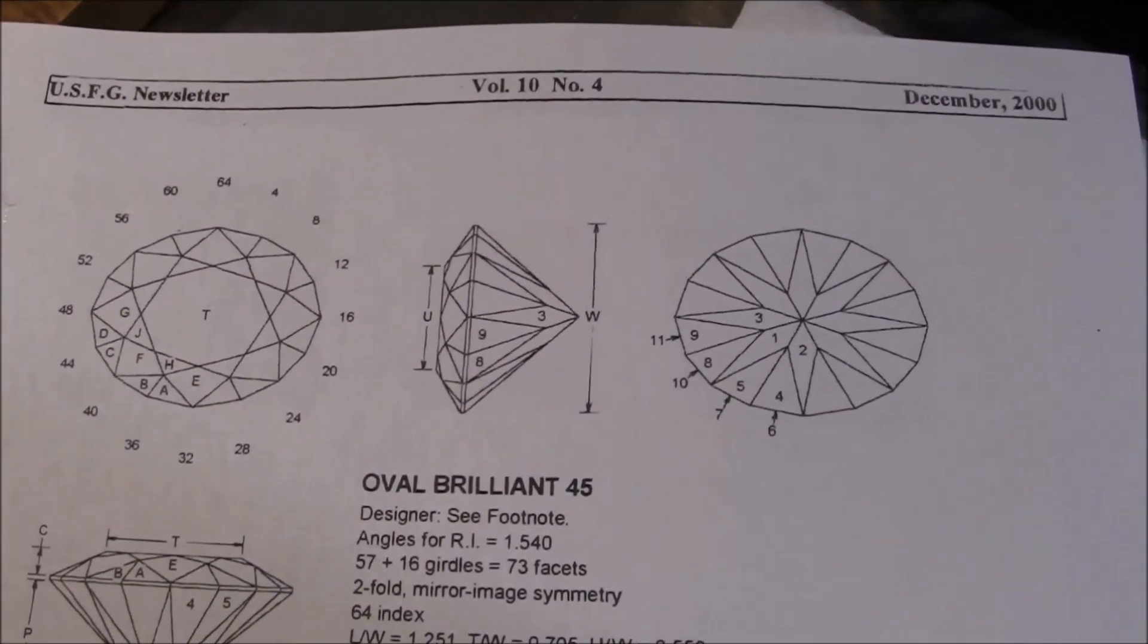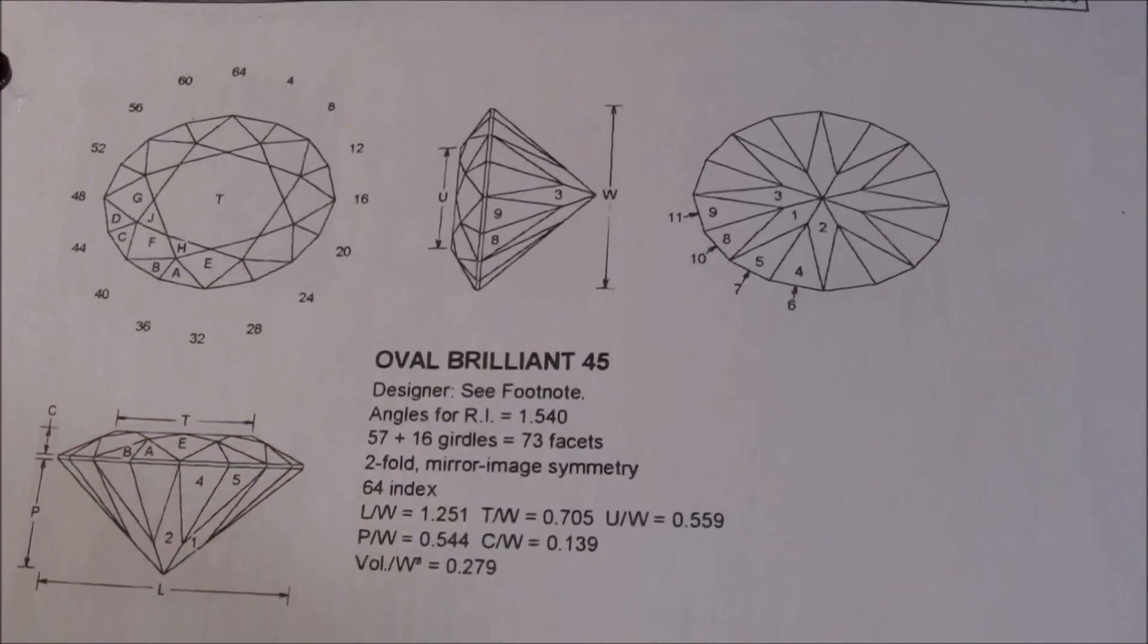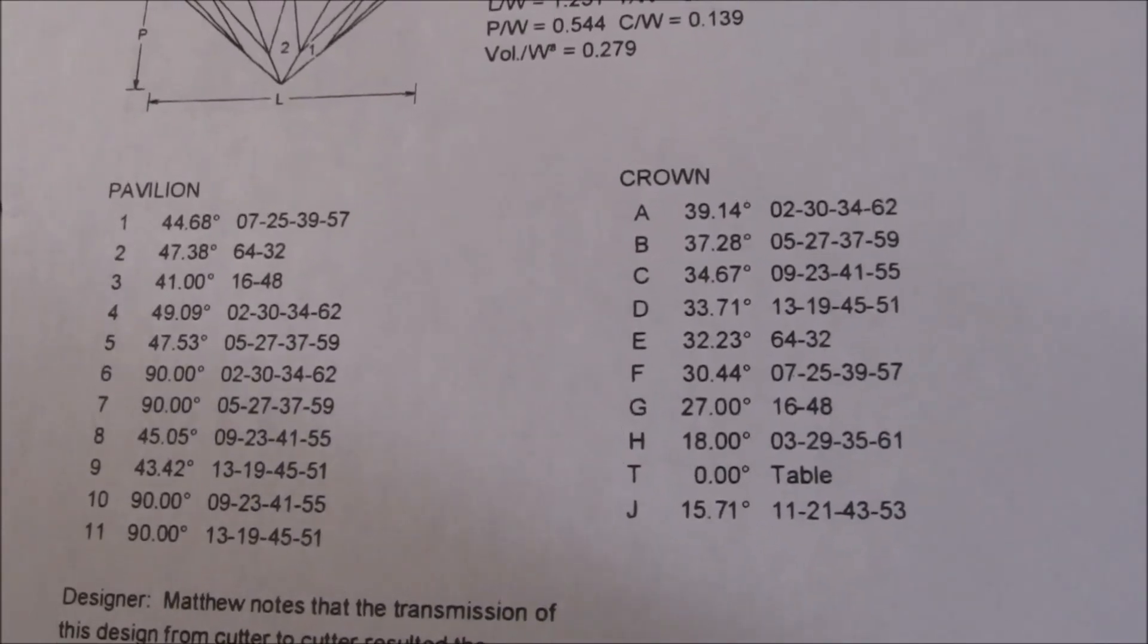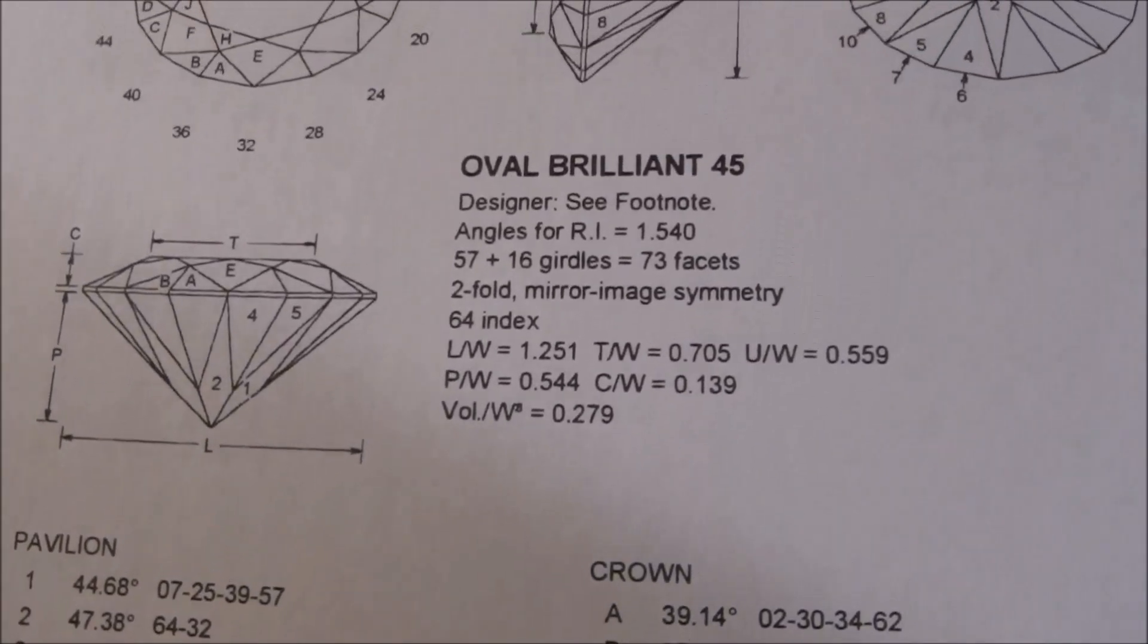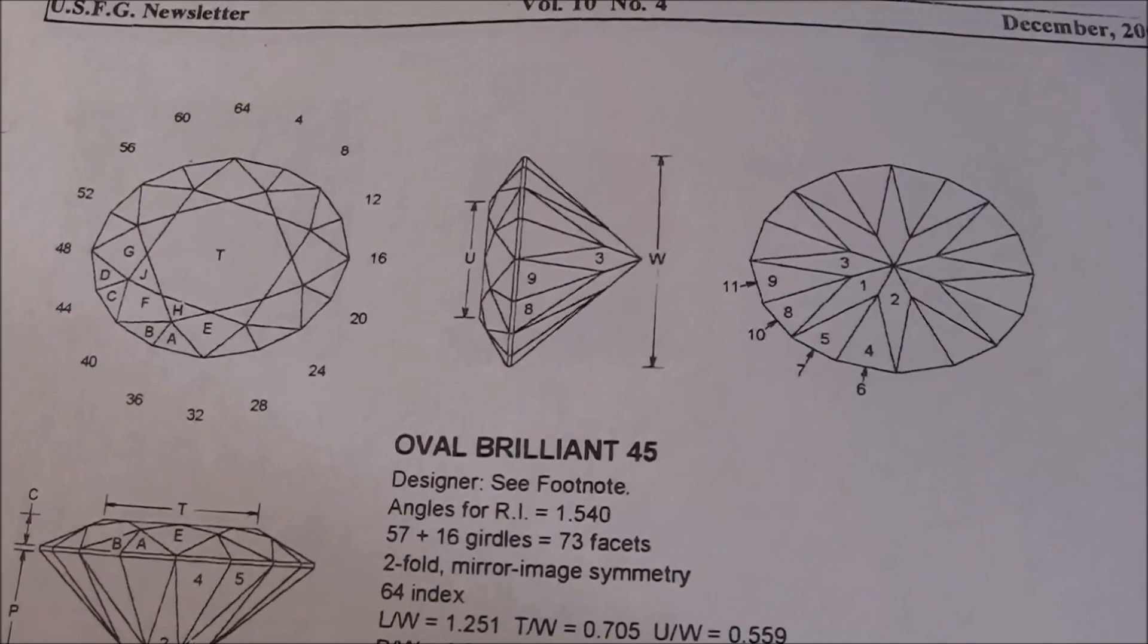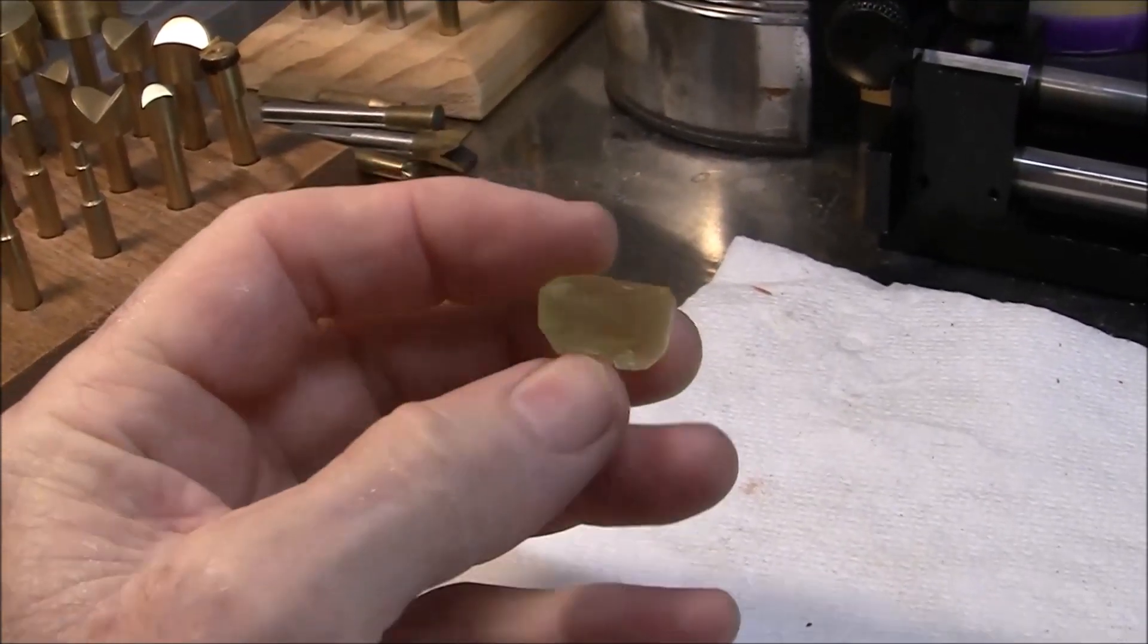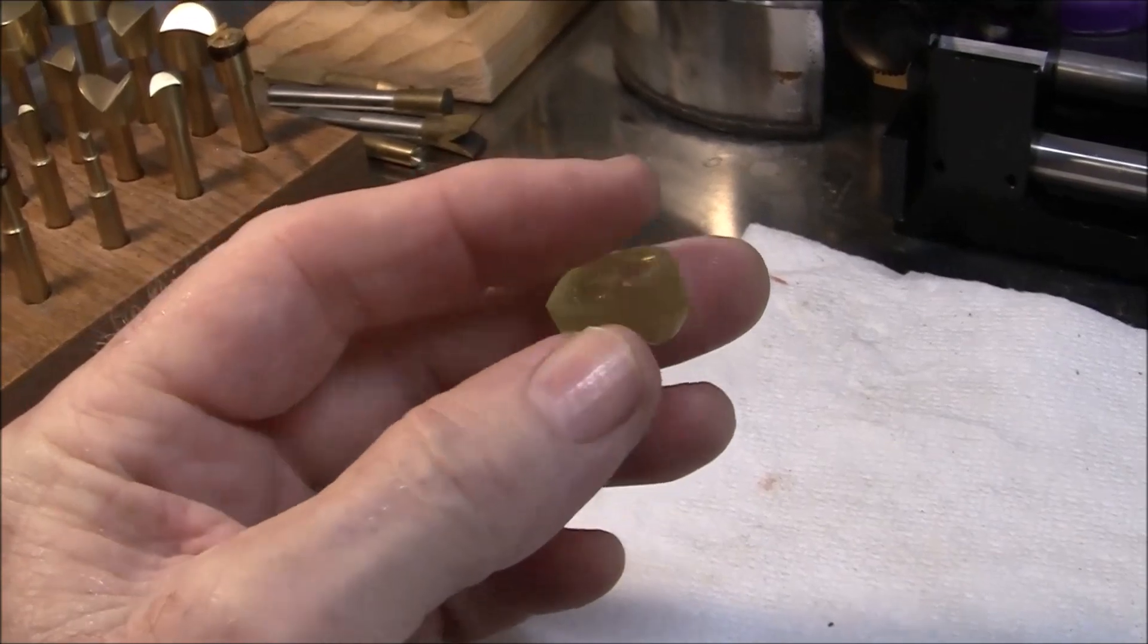I'm going to cut this oval shape which seems to be a pretty straightforward one with nothing fancy. Hopefully this will help people that struggle with an oval or it's their first time to do one. The stone turned out pretty good. Here I've preformed it on my grinding machine, my cabochon machine, and got it to a nice oval shape.